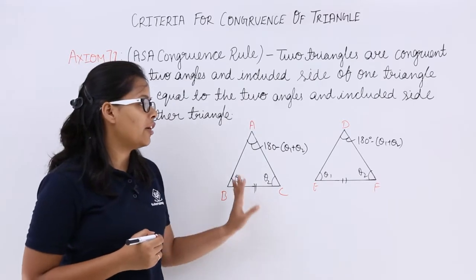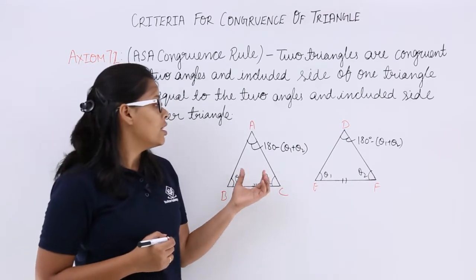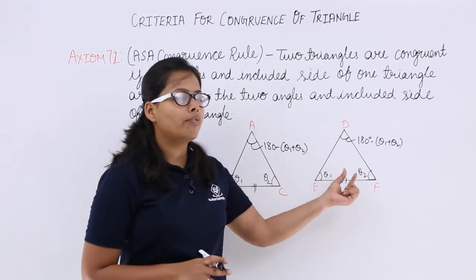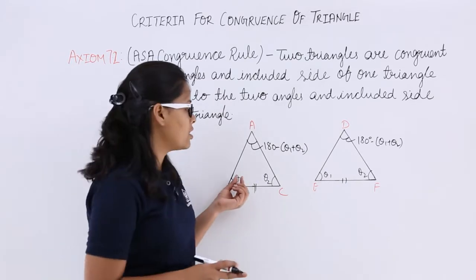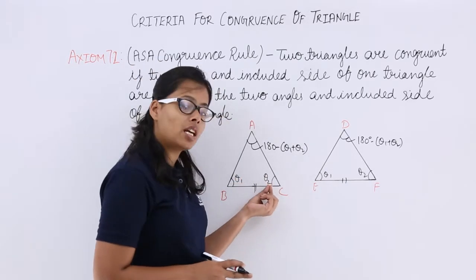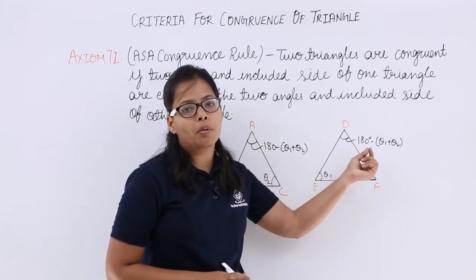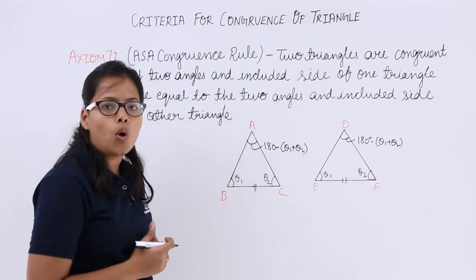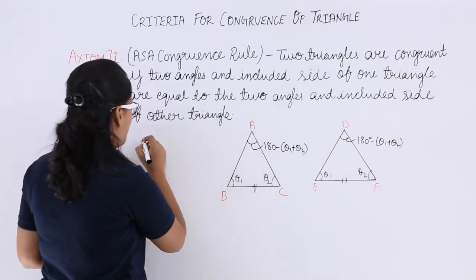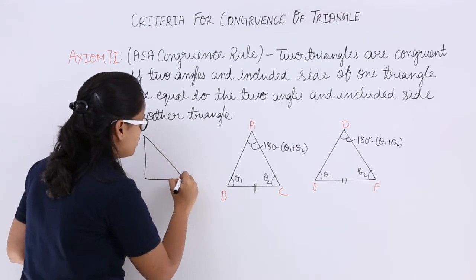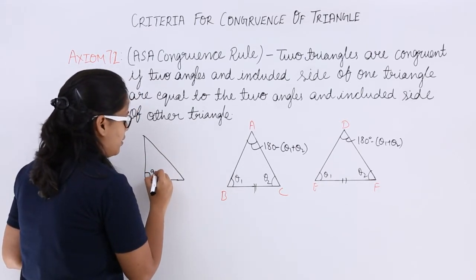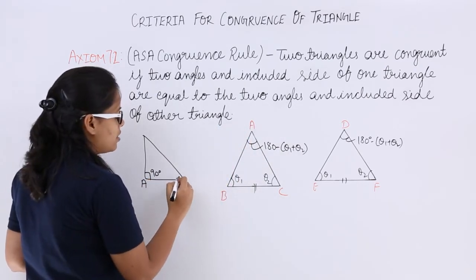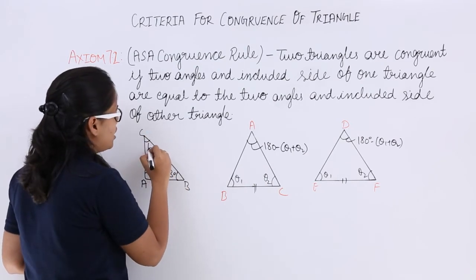You can see here that in both triangles the sides can be anything, but the angles of both triangles are the same. If one angle is 60 the other is also 60; if one is 30 the other is also 30; if one is 90 the other is also 90. For example, consider angle at A as 90 degrees, angle at B as 30 degrees, and angle at C as 60 degrees.